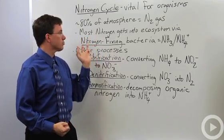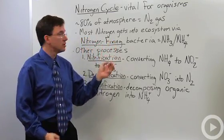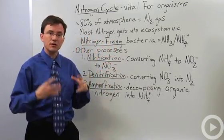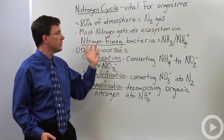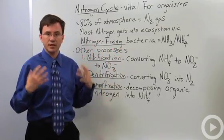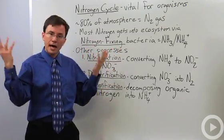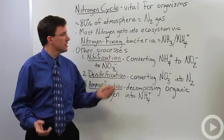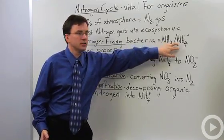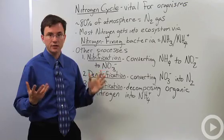That's why we need this process called nitrogen fixation. So most of the nitrogen that's in our ecosystem gets there via these nitrogen fixing bacteria. They convert that atmospheric nitrogen gas into ammonia and into ammonium, the ion.